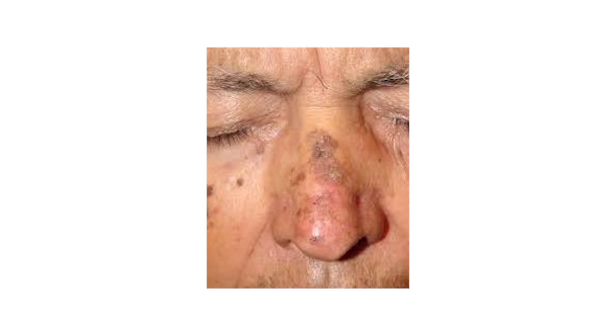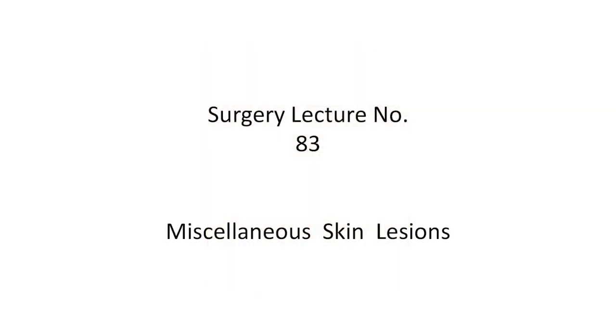On examination, the thickened patches of solar keratosis are yellowish-gray or sometimes brown in color. Usually the lesions are less than 1 cm in diameter and have a dry, hard scale on the surface. They are hard lesions firmly adherent to the skin. Careful watch must be kept to note whether the lesion is undergoing malignant change. Lymph nodes are never palpable in solar keratosis; if regional lymph nodes are palpable, it is certain that the lesion has turned malignant. This concludes surgery lecture number 83 on miscellaneous skin lesions. Thank you.